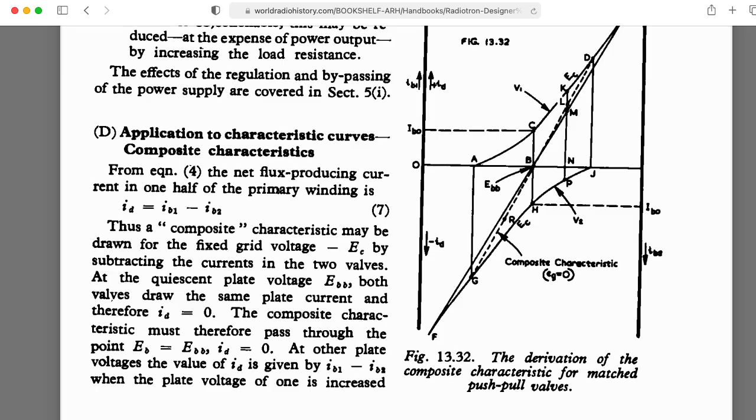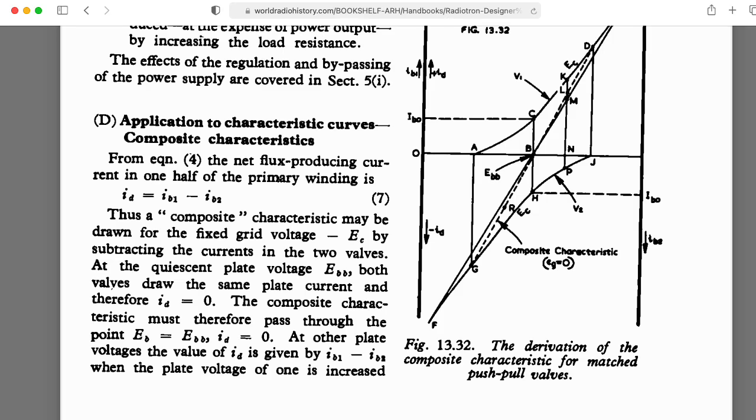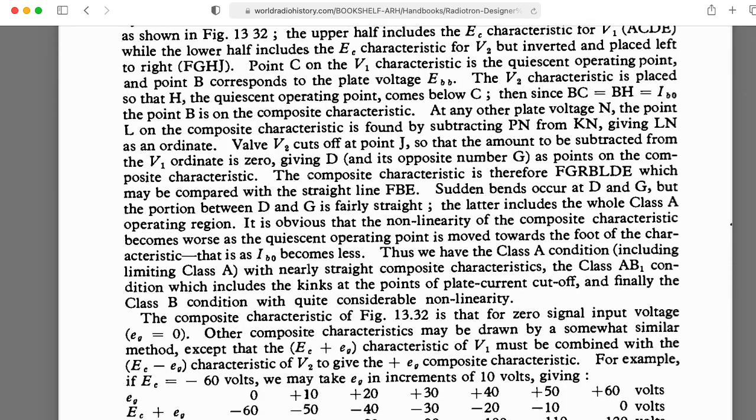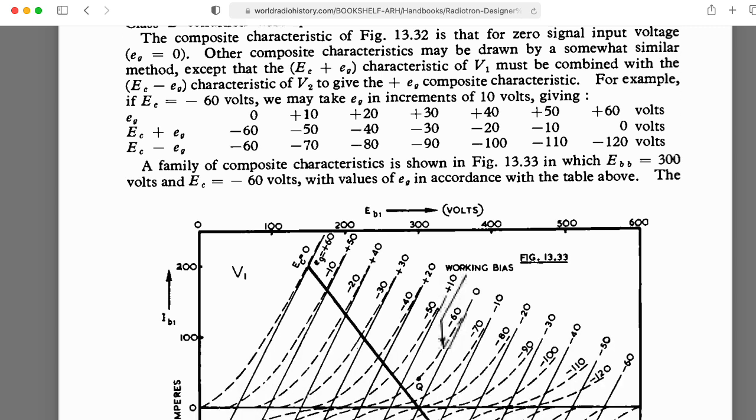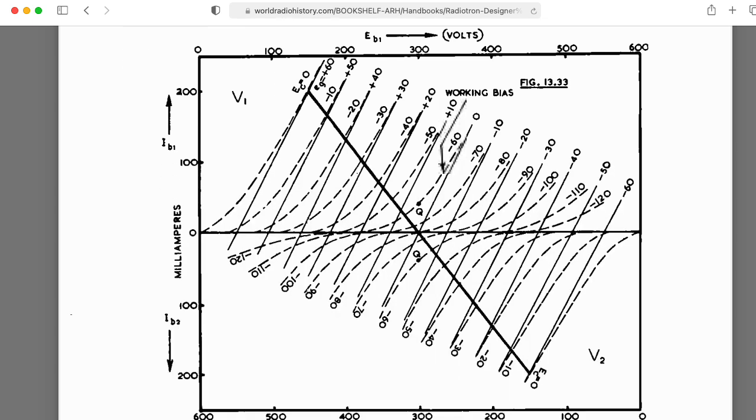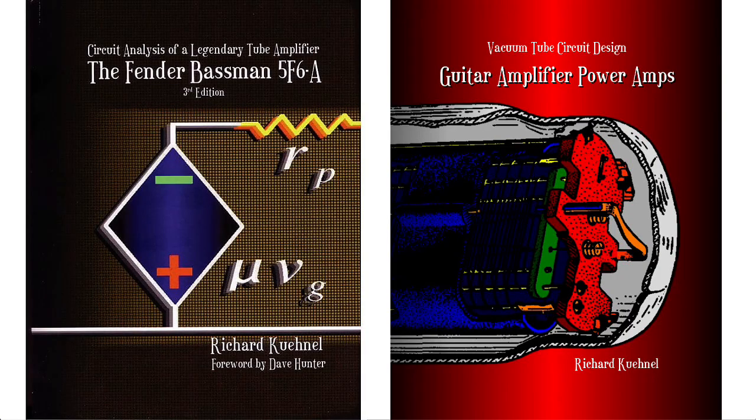Accurately analyzing a push-pull amplifier requires that you create these things called composite curves as described here in the Radiotron Designer's Handbook. This is awfully complicated stuff. It's more complicated than I want to get in this class. It's more complicated than I ever want to get in my life. If you would like to learn more about this, I would highly recommend Richard Kuehnel's books.